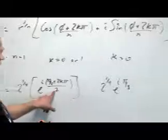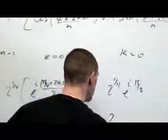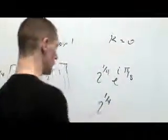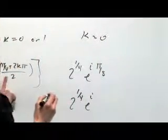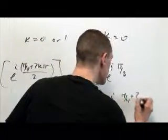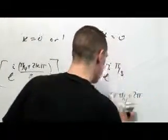And pi over 4 divided by 2. And when k is 1, we're going to have 2 to the 1 fourth, e to the i. So when k is 1, it's going to be pi over 4 plus 2 pi all over 2.